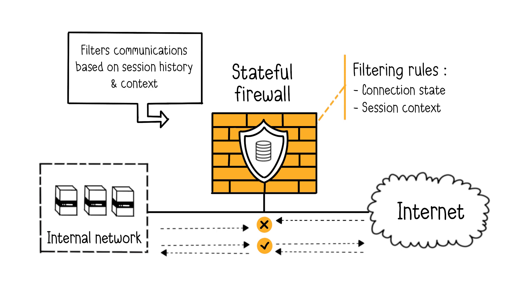Stateful firewalls mainly operate at the network and transport layers, which are layers 3 and 4 of the OSI model. So they don't deeply inspect application layer data, making them less effective against application-specific attacks.